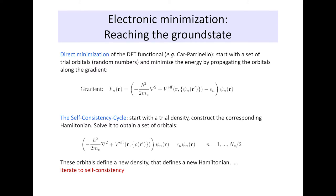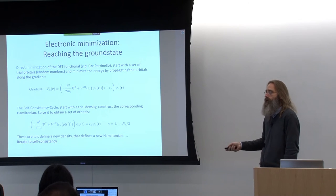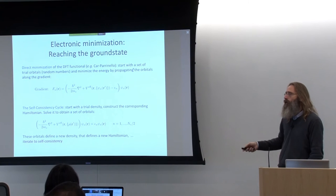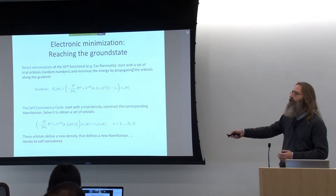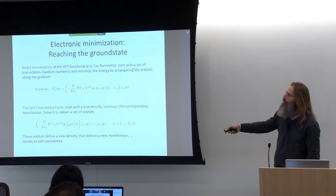The thing we commonly do is the self-consistency cycle, which is slightly different. We don't start per se with trial orbitals, but with a trial density. We construct the Hamiltonian in accordance with this density, then essentially diagonalize it — solving this equation gives a new set of orbitals and a new density. We then mix this new density with the old one, defining a new Hamiltonian to diagonalize again. So here we work directly on the orbitals; in the self-consistency cycle we work with the density.